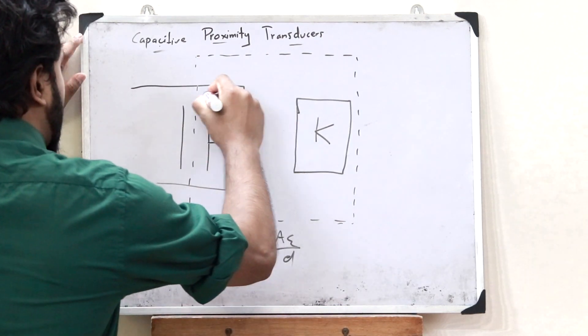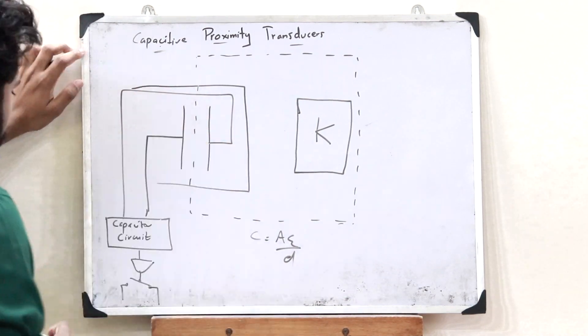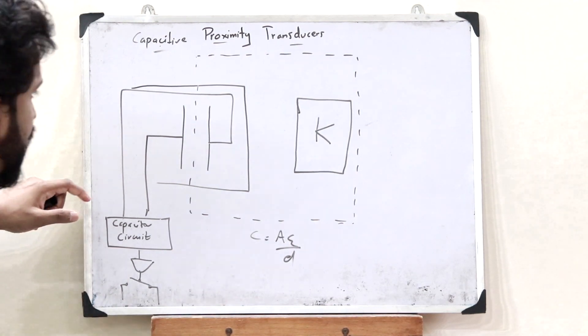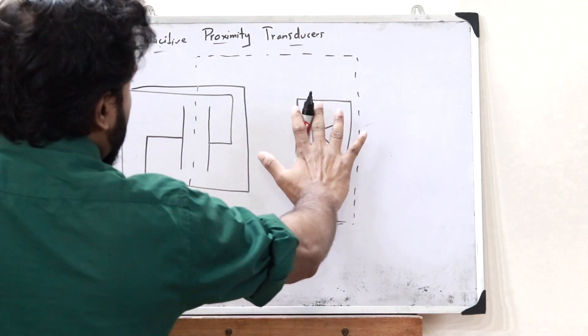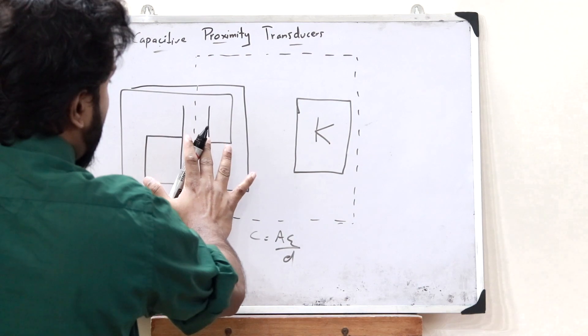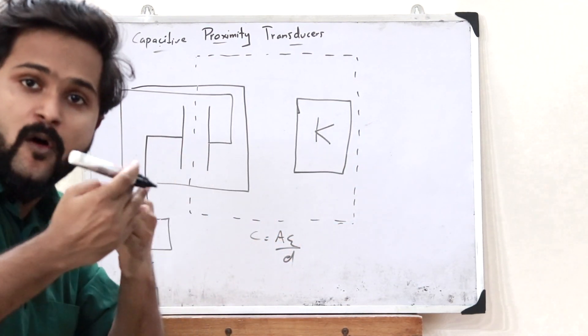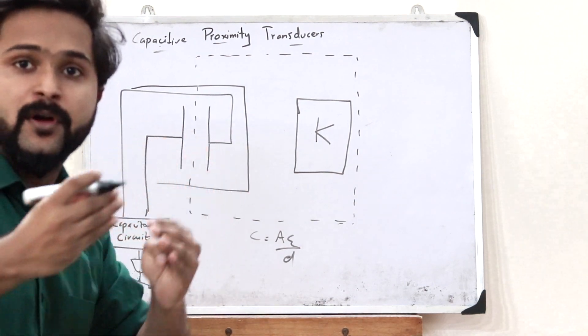Therefore this is connected to a particular capacitor circuit, and it is connected to a particular switch. What happens is that in the presence of this particular object, when the capacitance exceeds a particular value, the oscillating frequency also exceeds a particular value.